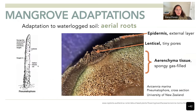Looking more closely at the pneumatophore structure, you can see tiny dots called lentils — these are small holes that allow oxygen to go in and carbon dioxide to go out.